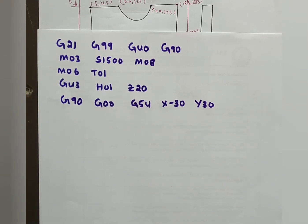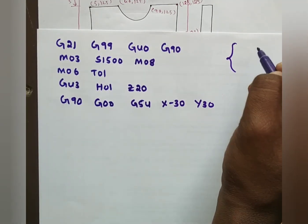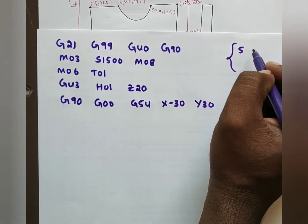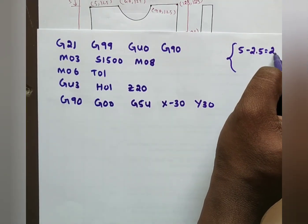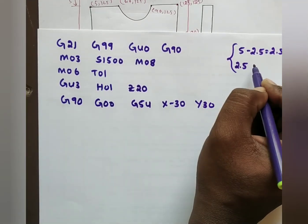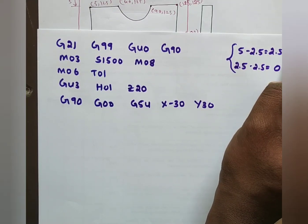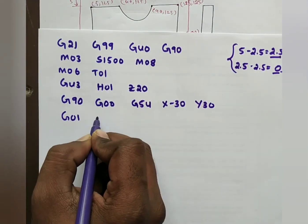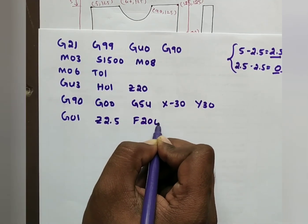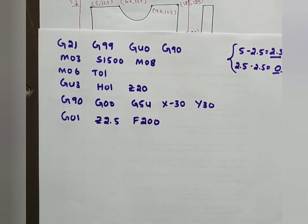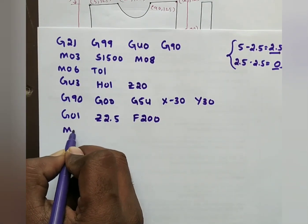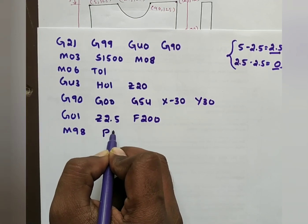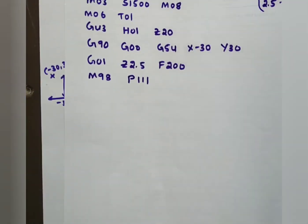For face milling, 5 mm material must be removed using a two-pass method — 2.5 mm per pass. In the first pass, Z value is 2.5; in the second pass Z value is 0. Set depth: G01 Z2.5, feed rate 200 mm/min. Since I am removing material in two passes, I will use the subprogram method. Call the subprogram: M98 P111.